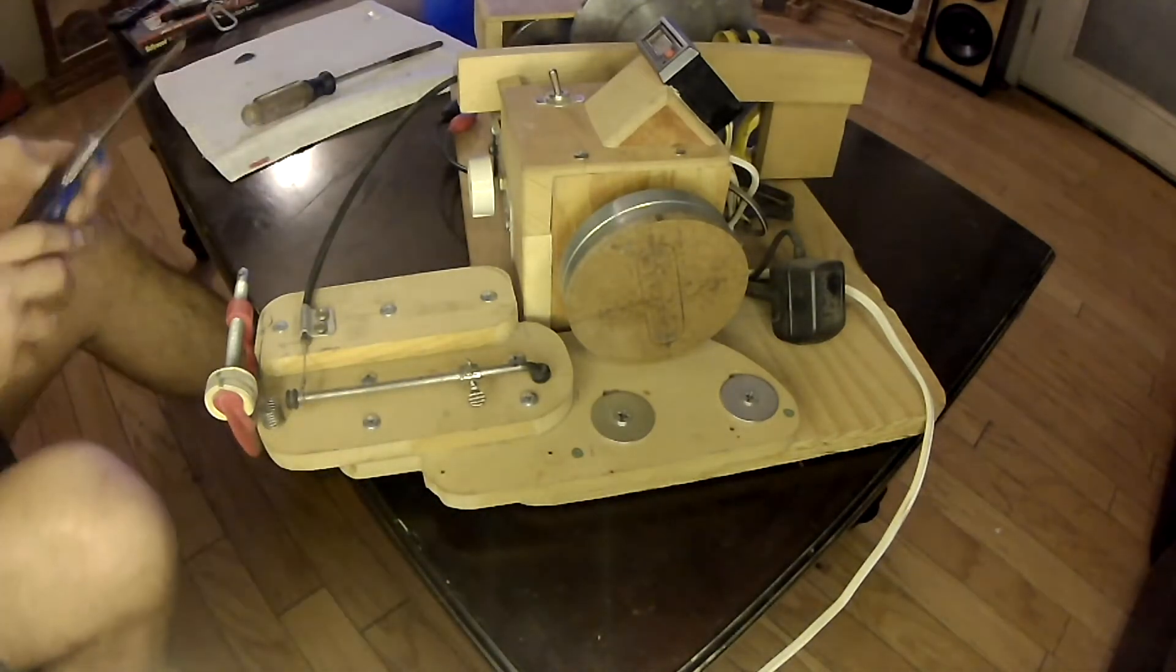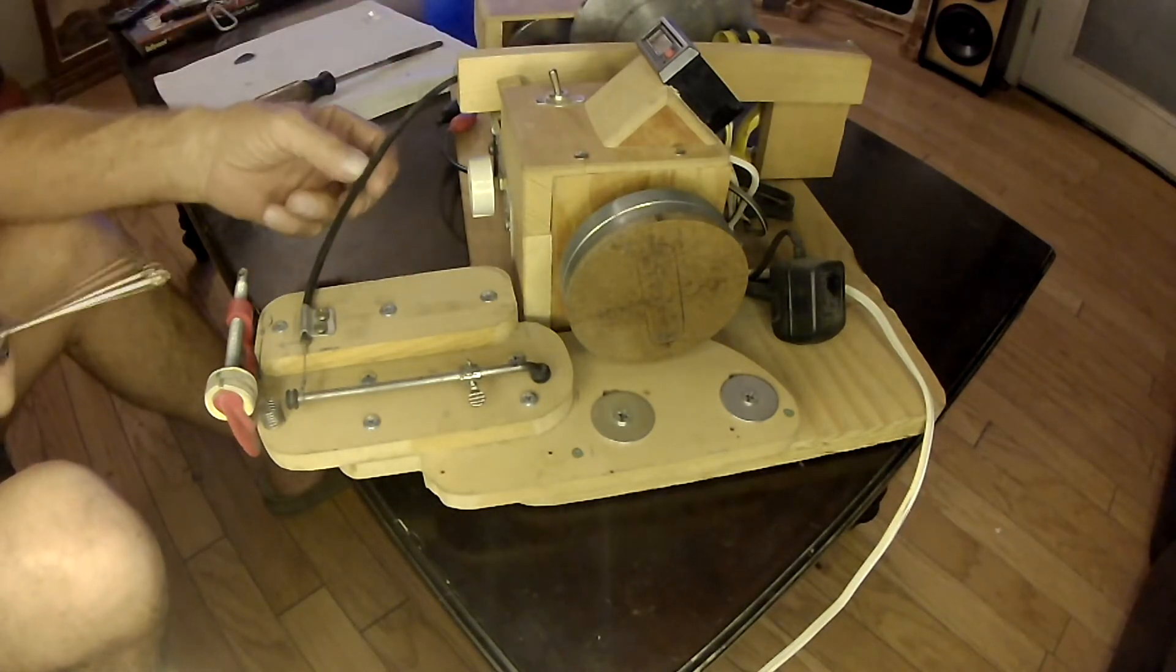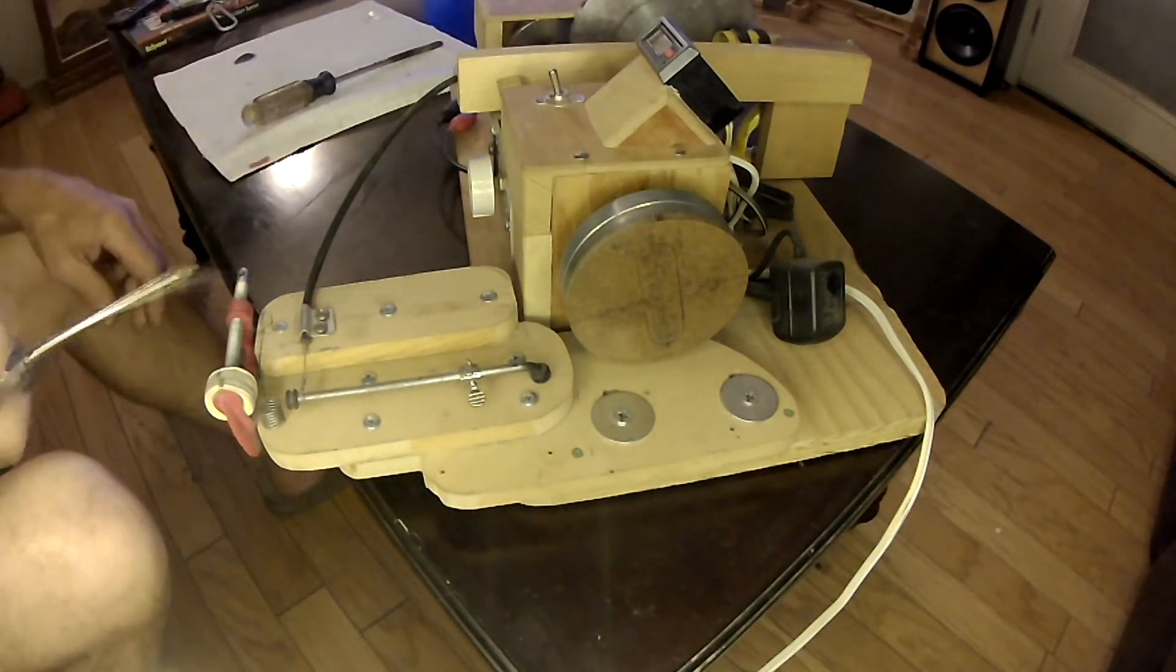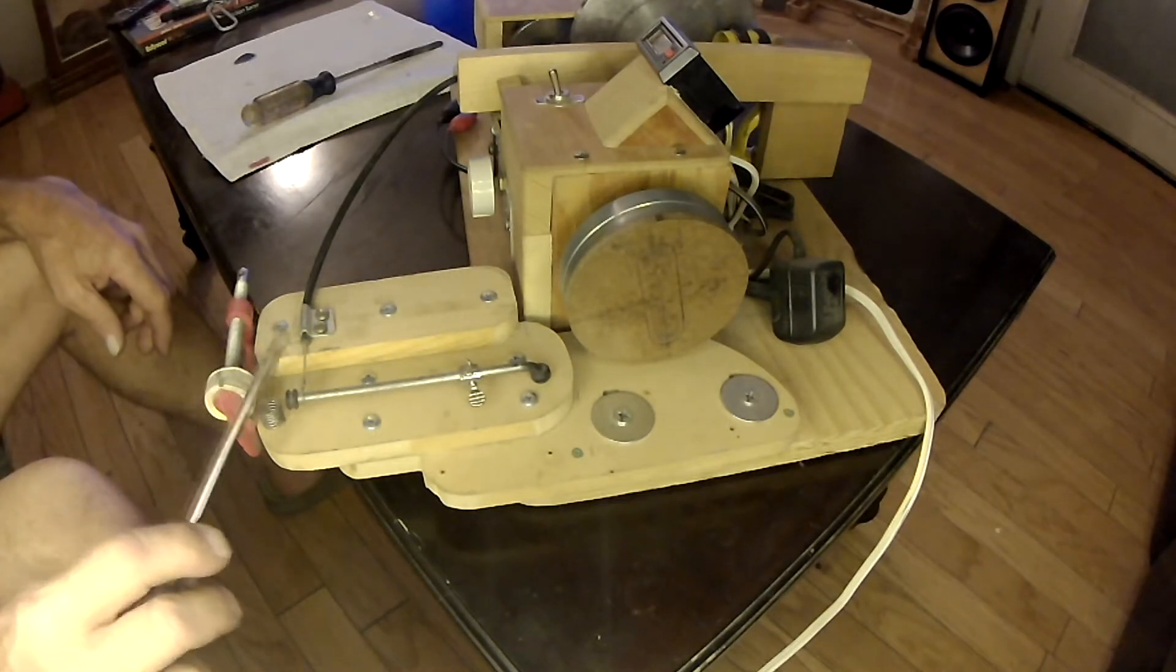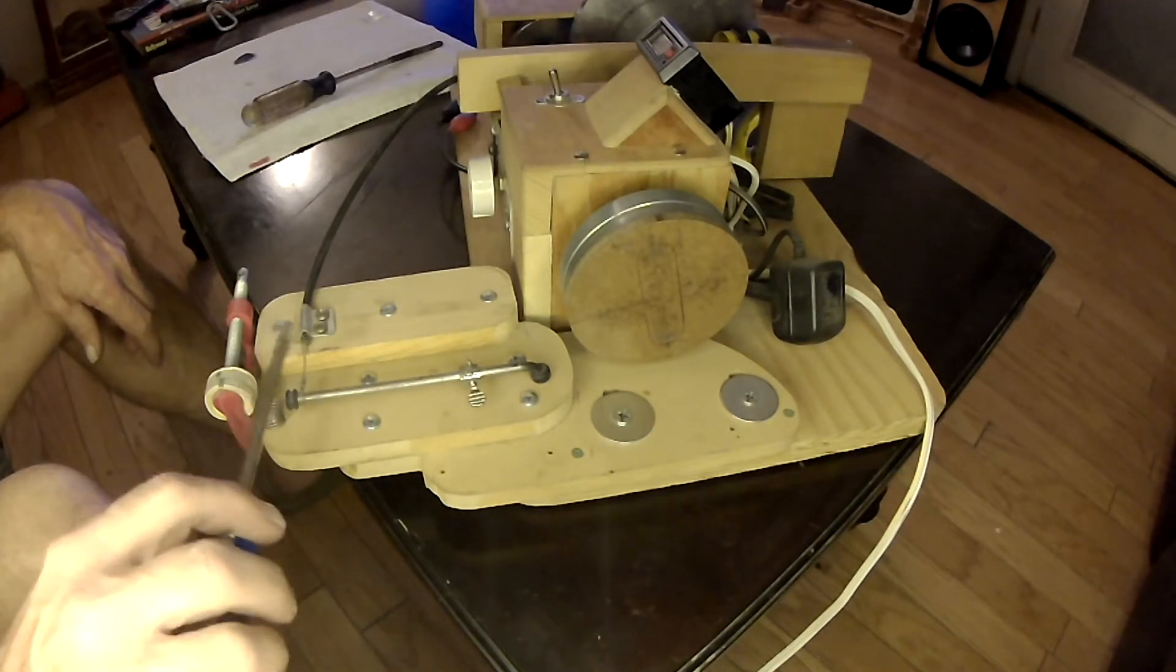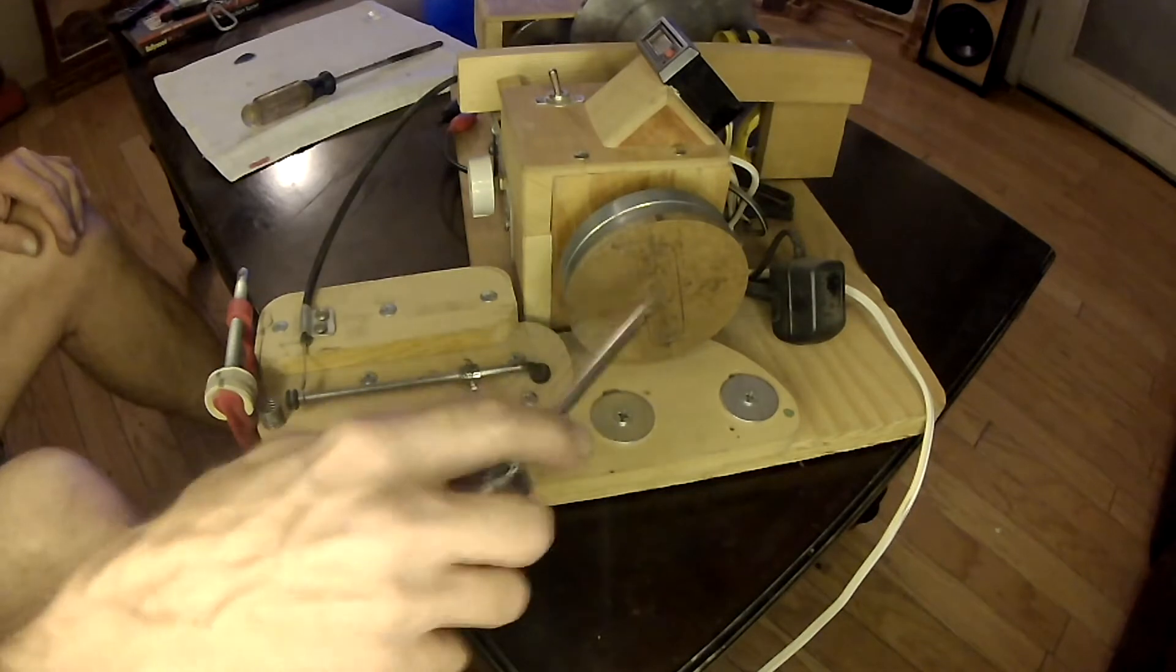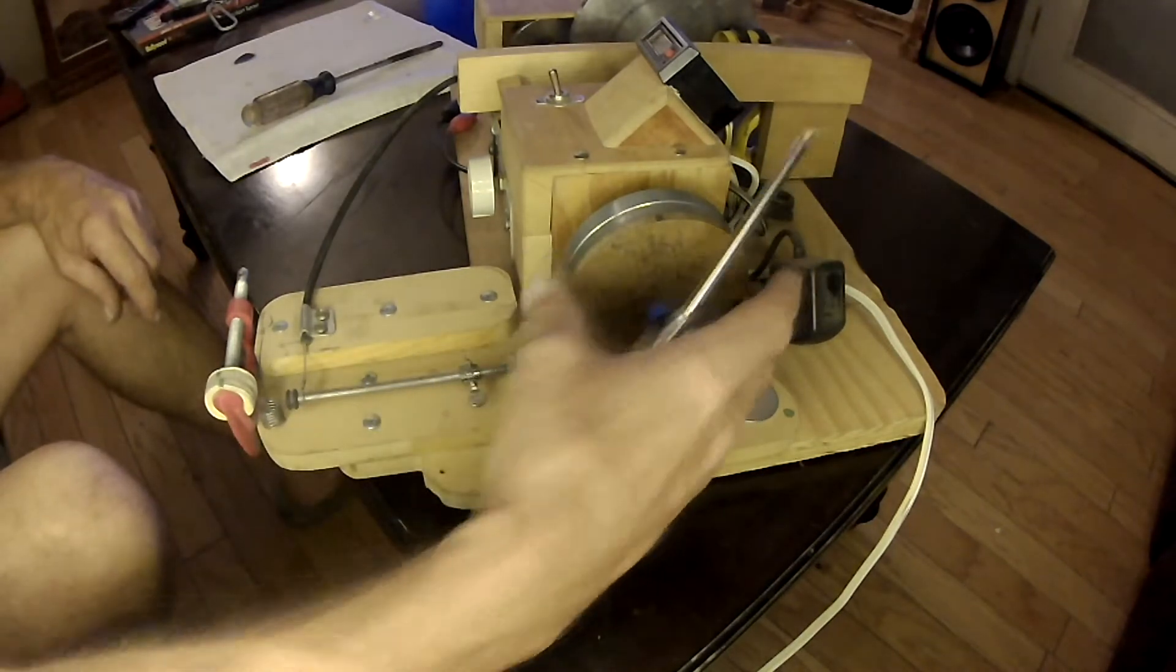The traverse is powered by a fishing reel that we'll get to in a moment. You can see the cable here. This here is a dancer. It keeps the wire at a more constant tension as the odd shaped bobbin rotates.